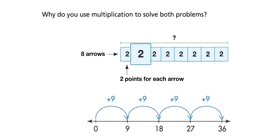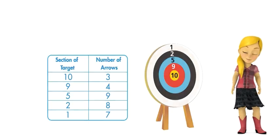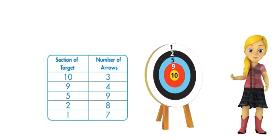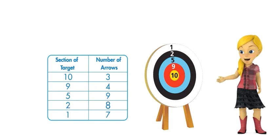Why do you use multiplication to solve both problems? To solve both problems, I am counting equal groups. I look at the table and I see eight groups of two and four groups of nine.